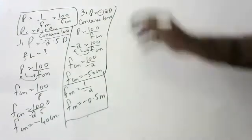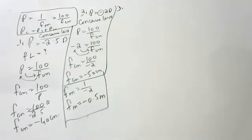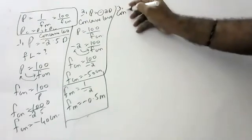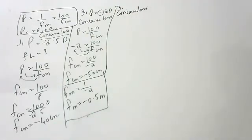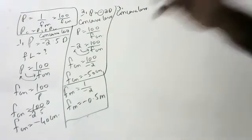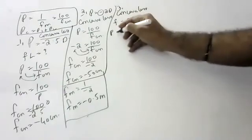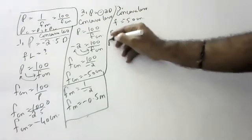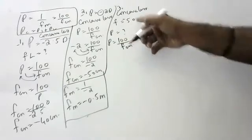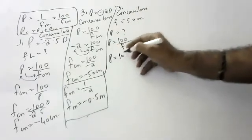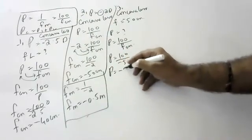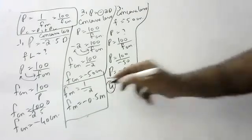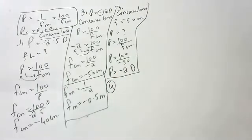Next: a person has a myopic eye and is using a concave lens of focal length 50 centimeters. Find the power. Since it is a concave lens, power = 100/(minus 50) = minus 2 diopters. Be very careful: the answer is minus 2 diopters.